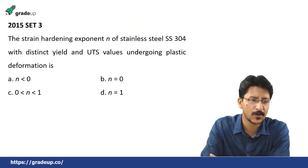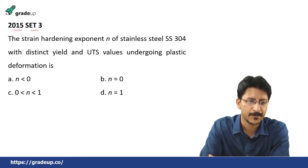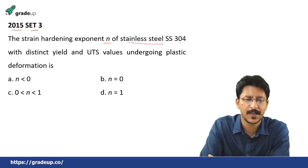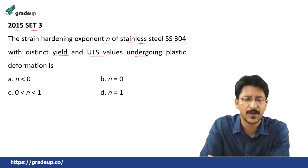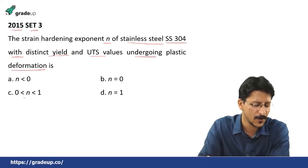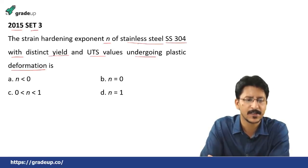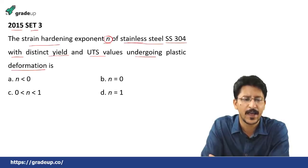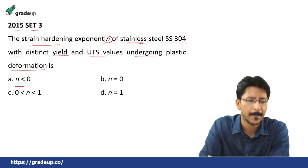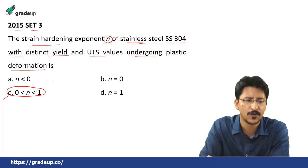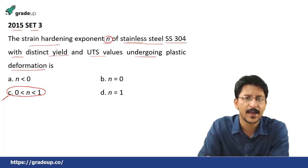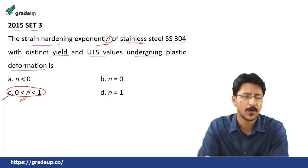GATE 2015, Set 3: The strain hardening exponent n of stainless steel SS 304 with distinct yield and UTS values undergoing plastic deformation is — for this, you have to remember that for stainless steel the strain hardening exponent n lies between 0 and 0.1. This is a straightforward answer; if you know this, you can simply mark it — there is nothing mathematical in this.